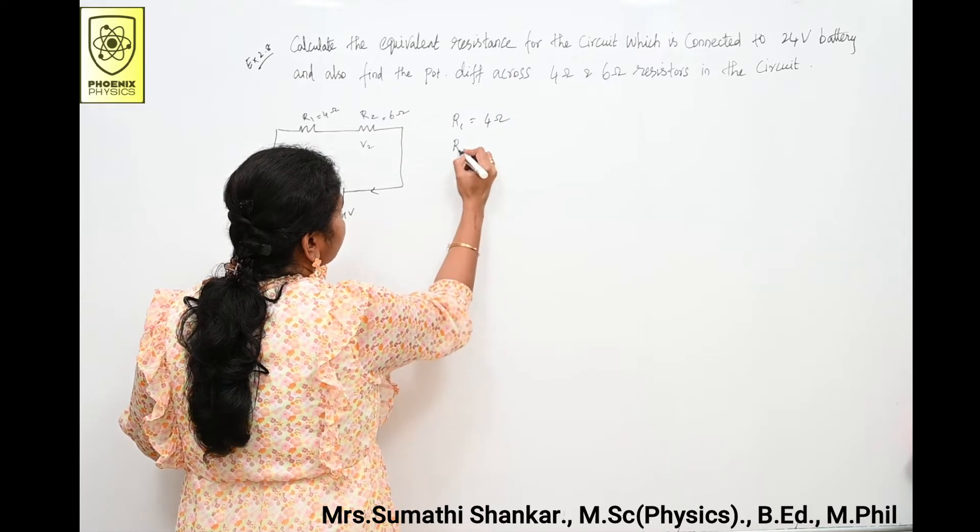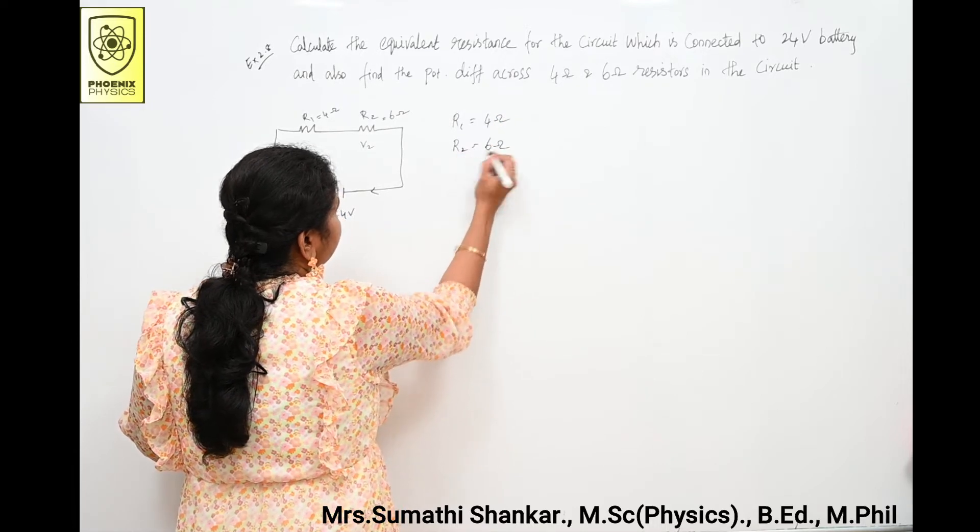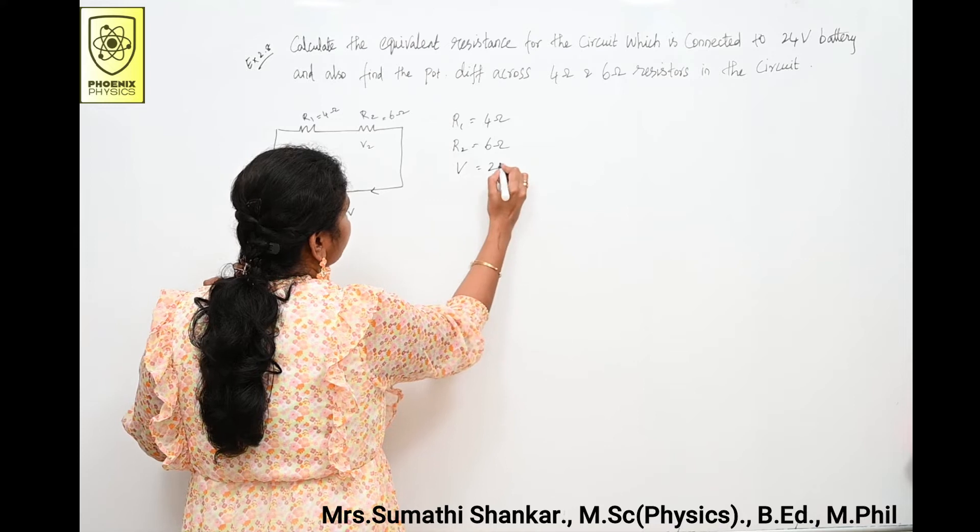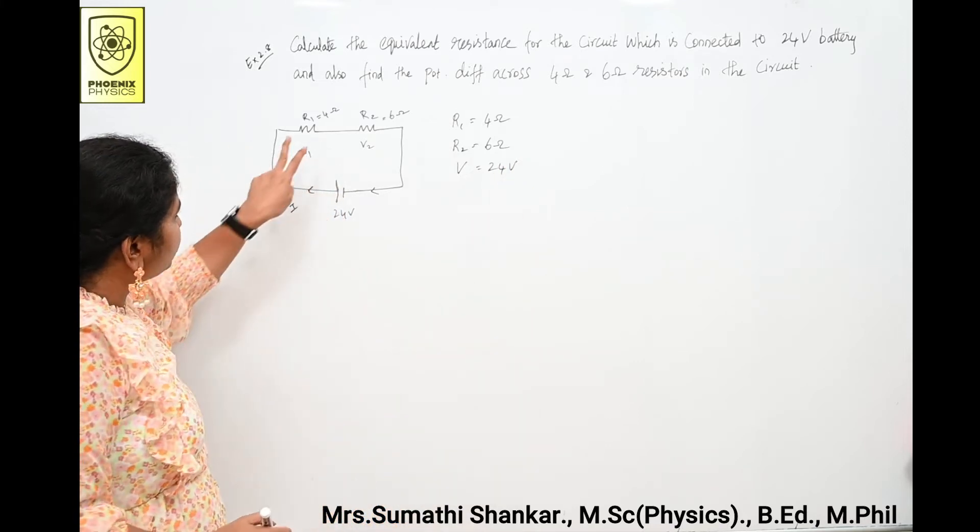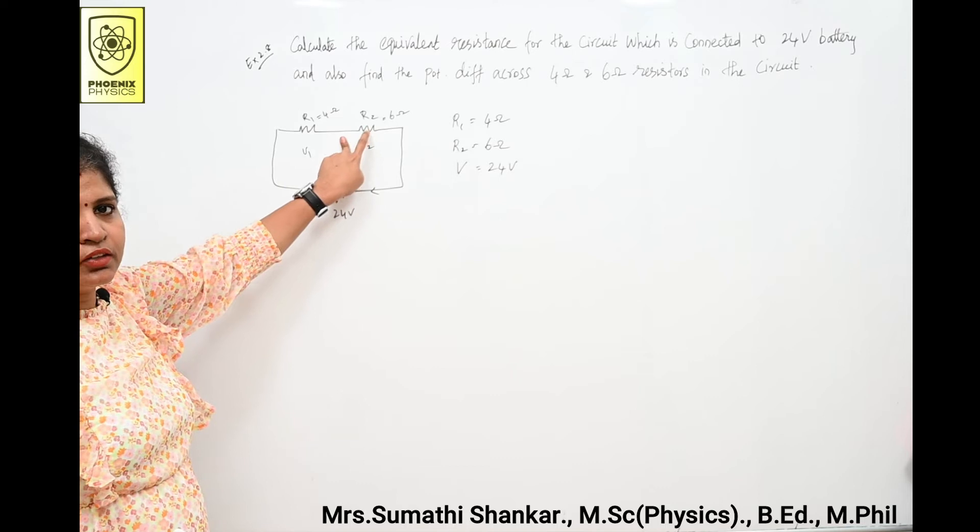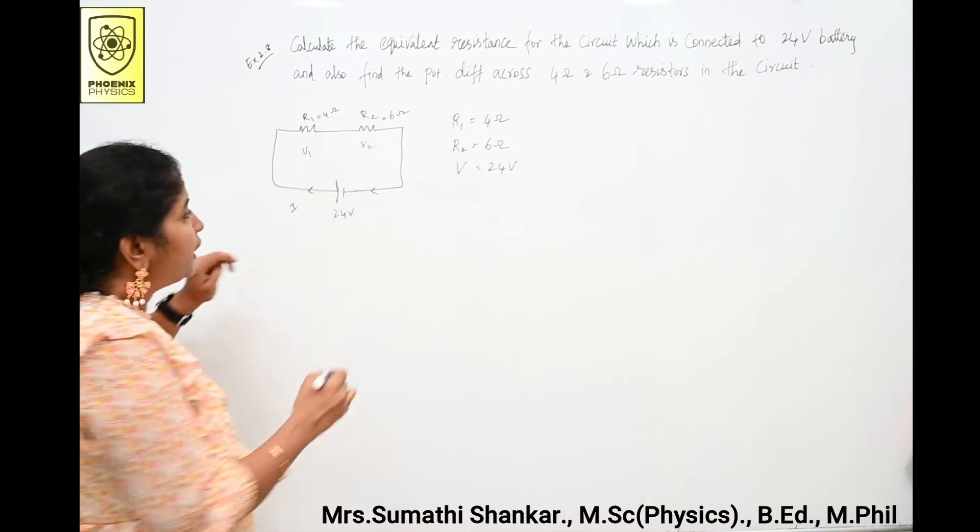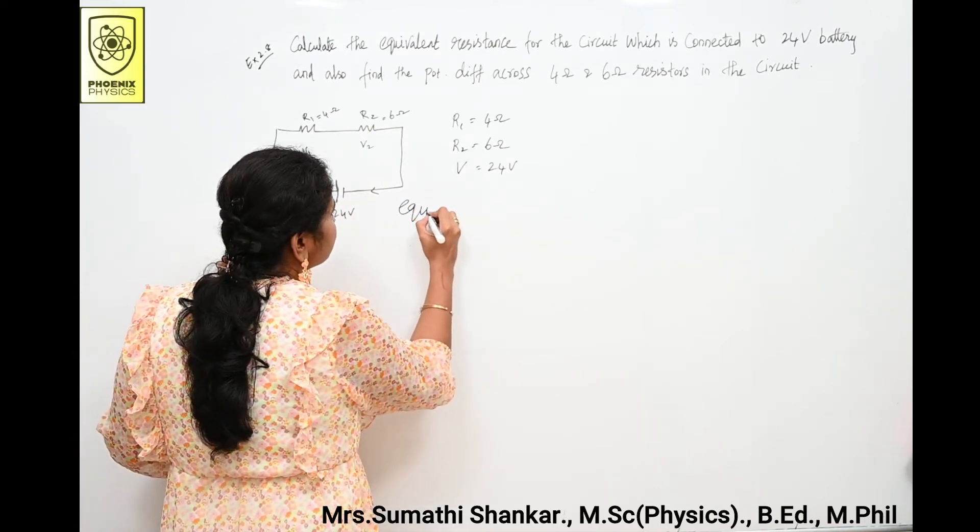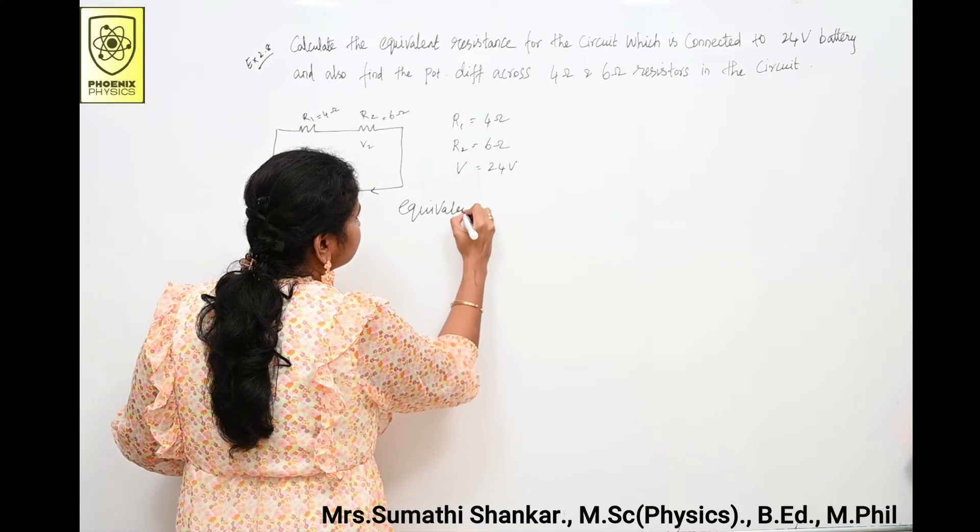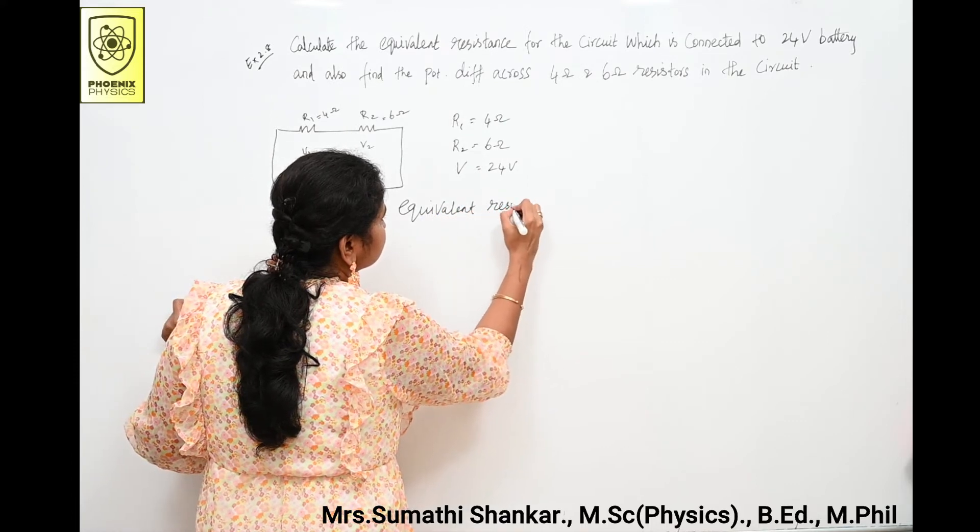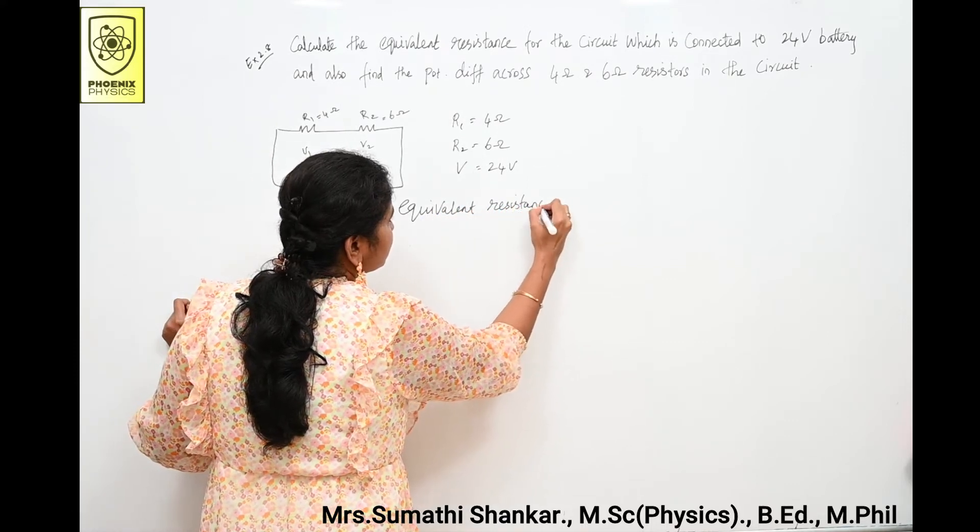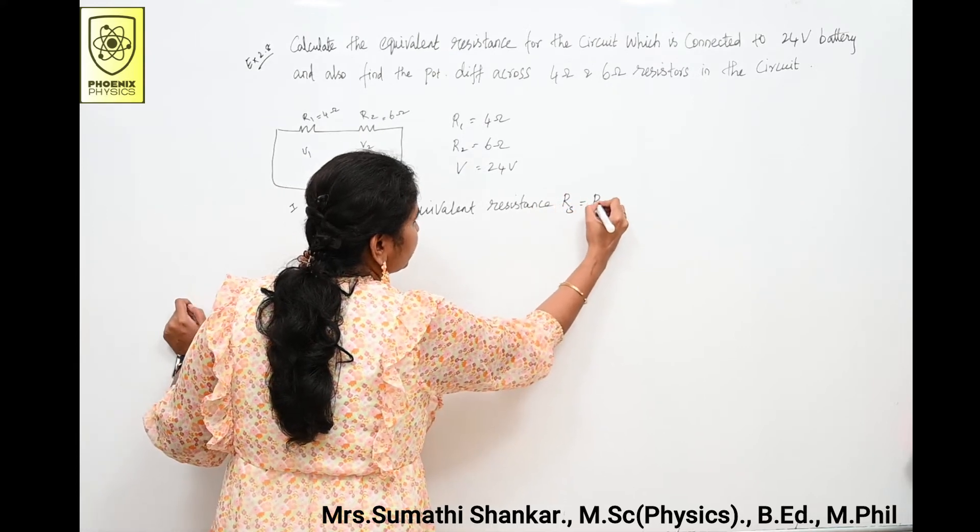R2 is equal to 6 ohm, then potential difference V is equal to 24 volt. Here both the resistors are connected in series. Then how do you find out equivalent resistance? That is denoted by Rs, which is equal to